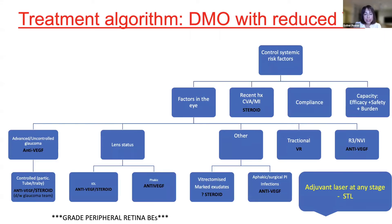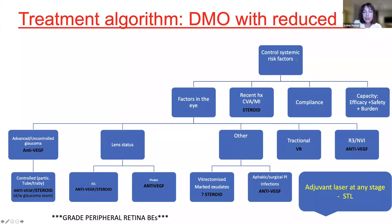In the clinic, when we have a patient with reduced vision we go through a systematic decision process. The thing most important to take on board is that control of systemic factors is absolutely paramount. If blood pressure is very uncontrolled you may ask physicians to control it first rather than jumping to treat the eye.